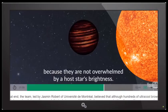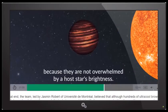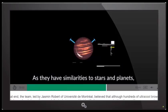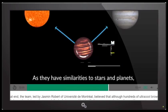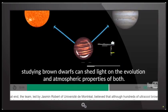What do you have to say about that? I'm sure they'll have something to say. But anyways, let's keep on moving with our information. Now it says as they have similarities to stars and planets, meaning the brown dwarfs, you can see they're doing a comparison here. Of the size, and it says studying brown dwarfs can shed light on the evolution and atmospheric properties of both.